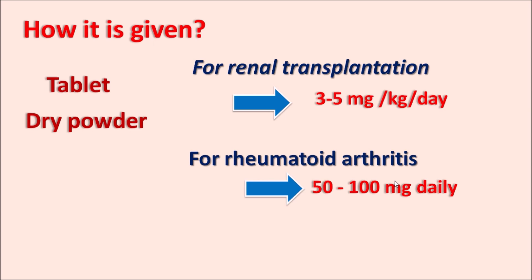In summary, azathioprine is an anti-metabolite and a prodrug of 6-mercaptopurine. As a thiopurine derivative, it acts as an immunosuppressant and anti-inflammatory agent, used to prevent renal transplant rejection and to treat rheumatoid arthritis, Crohn's disease, and ulcerative colitis. In vivo, it is converted to 6-mercaptopurine by glutathione S-transferase, then to 6-thioinosinic acid by HGPRT, which inhibits purine synthesis. Thioguanines are incorporated into DNA, inhibiting DNA synthesis.